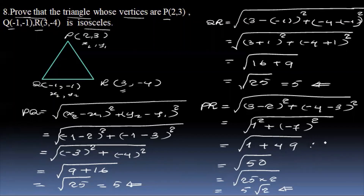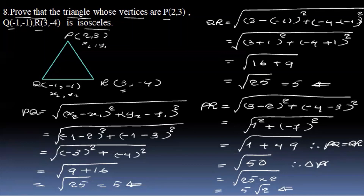Therefore, PQ is equal to QR. Therefore, triangle PQR is isosceles.